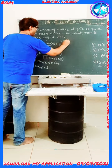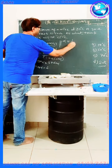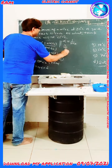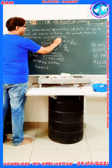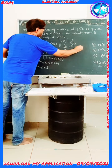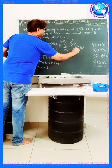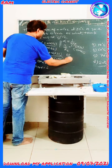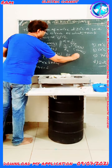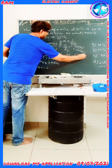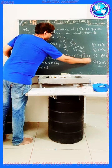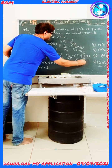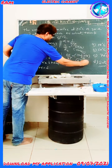Therefore α = 1/220. Now applying the same formula with R1/R3: 20/25 = (1 + (1/220)×20) / (1 + (1/220)×T3), where T3 is the unknown temperature we need to calculate.